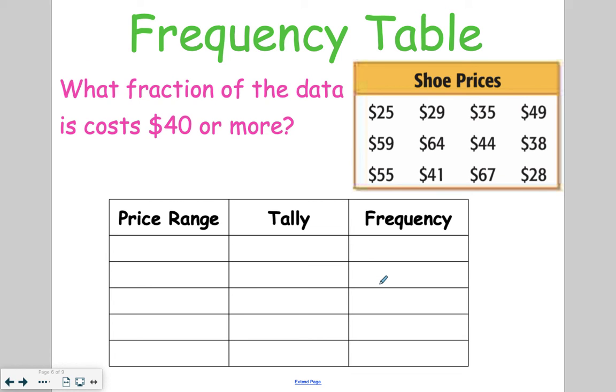Now we're going to talk about one that has a frequency table with numbers. So we're looking for what fraction of the data costs $40 or more. And here are our different prices over here. When determining the intervals, you're going to want to look at the smallest number, which is $25, and the biggest number, which in this case is $67. To get from $25 to $67, we can count by $5s or $10s. I'm going to go ahead and count by $10s.